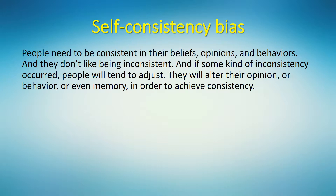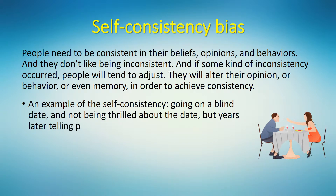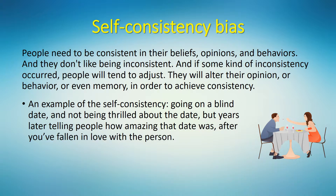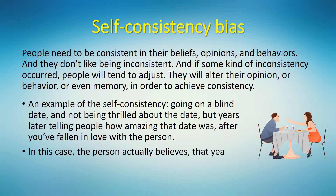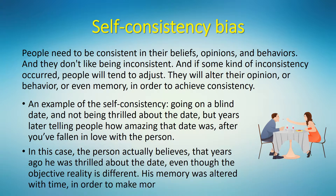Why is consistency so important? An example of self-consistency bias would be going on a blind date and not being thrilled about it, but years later telling people how amazing that date was after you've fallen in love with the person. In this case, the person actually believes that years ago he was thrilled about the date, even though the objective reality is different. His memory was altered over time in order to make more sense in the present.